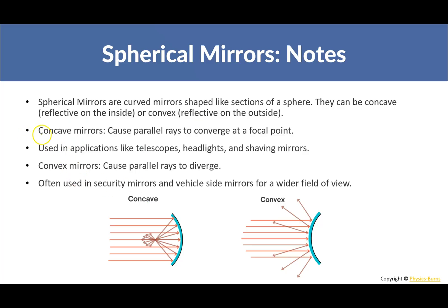Spherical mirrors are curved mirrors shaped like sections of spheres. They can be concave, reflective on the inside, or convex, reflective on the outside. Concave mirrors cause parallel rays to converge at a focal point, represented by F, and are used in applications like telescopes, headlights, and shaving or makeup mirrors.